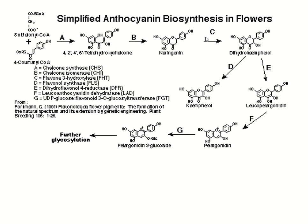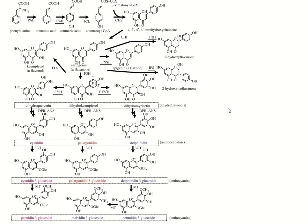If asked to write anthocyanin biosynthesis in the flower, you must write enzymes A through G as well as their names. You need not remember all structures, but if you are in biochemistry, you will certainly be asked how OH is formed or removed. The shikimic acid pathway intermediates lead to 4-coumaroyl-CoA. Phenylalanine is the precursor, and phenolics are responsible for the formation of flower pigments.